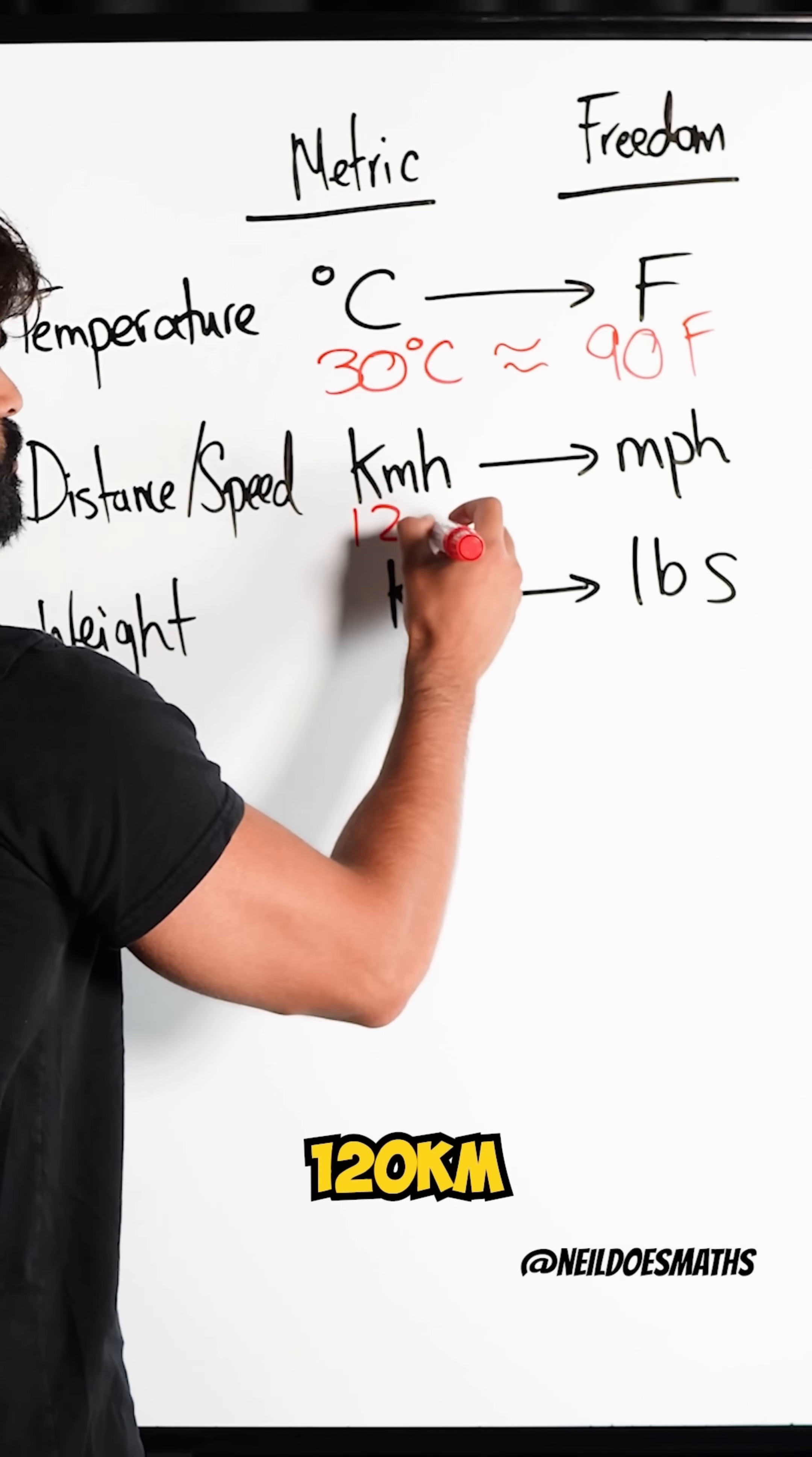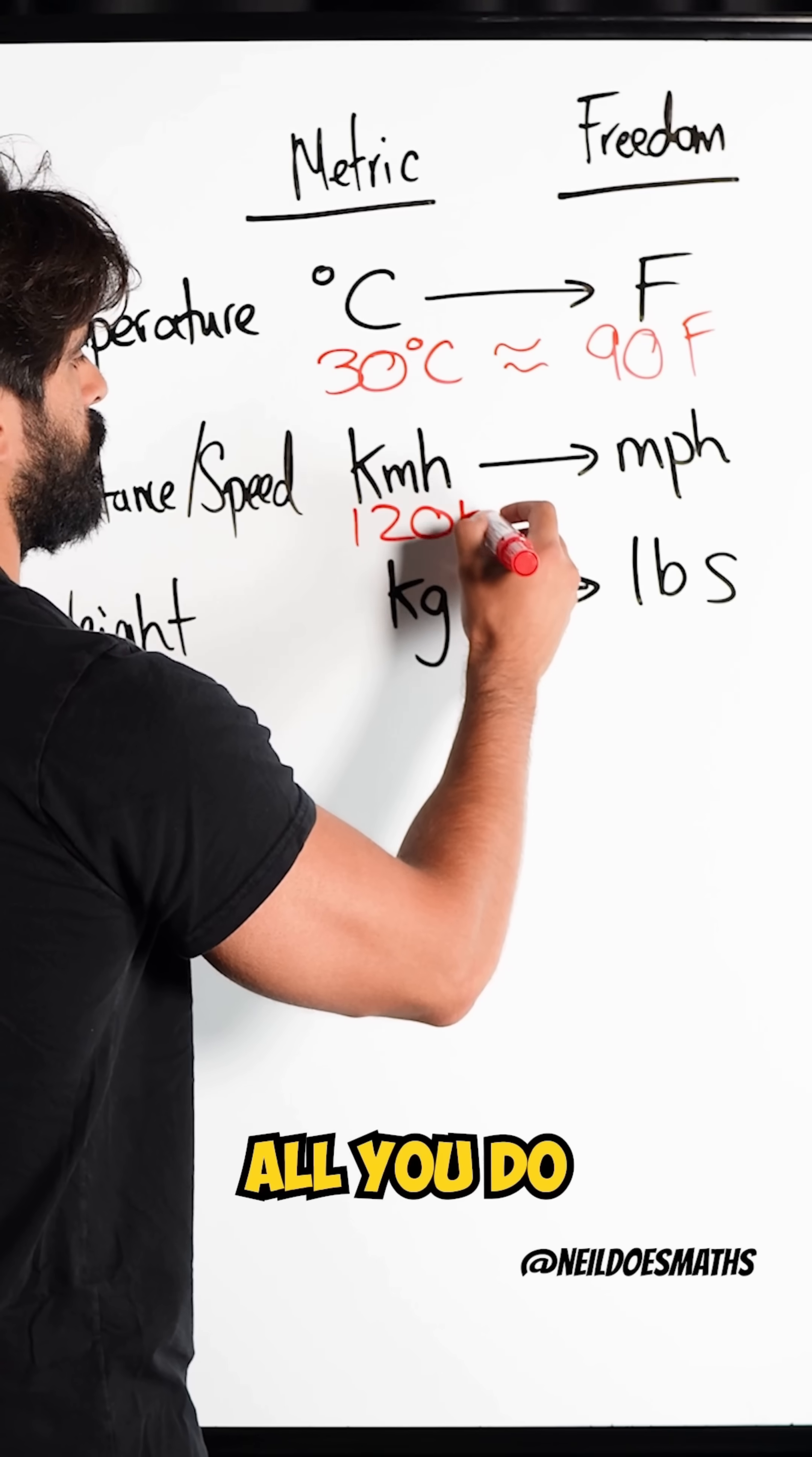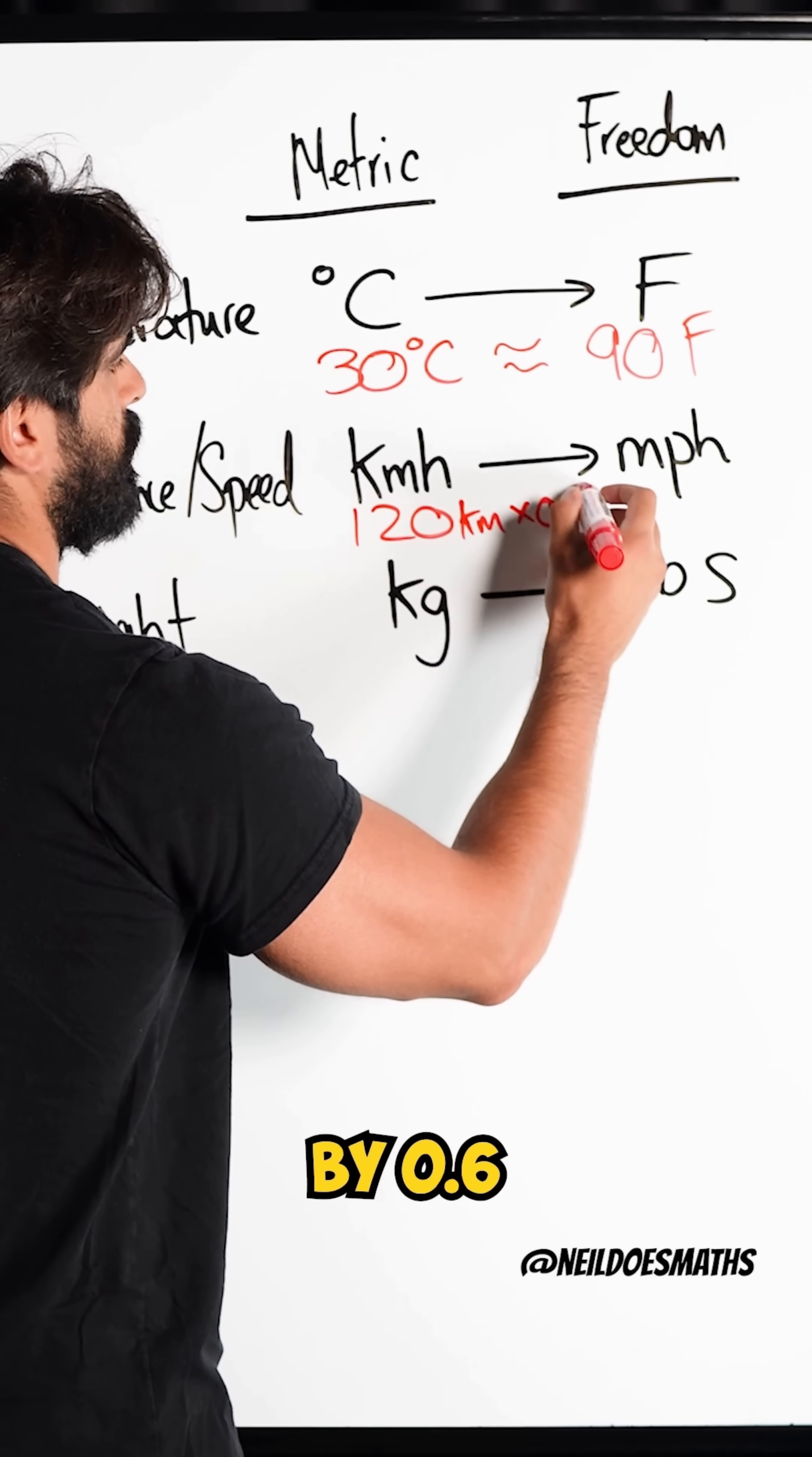For example, if I have 120 kilometers or 120 kilometers per hour, all you do is multiply by 0.6.